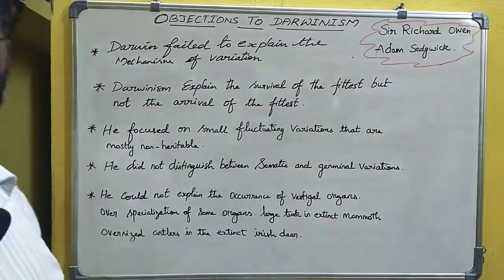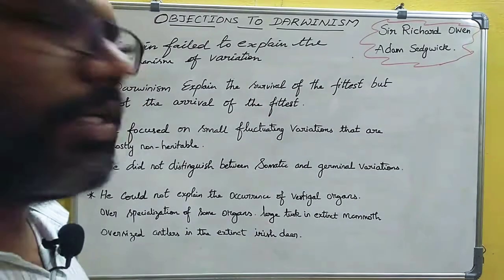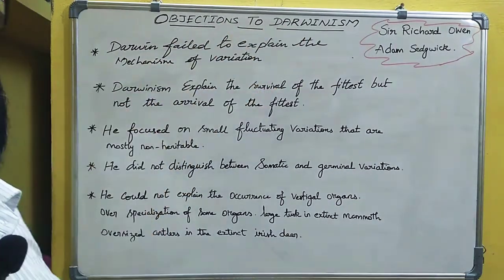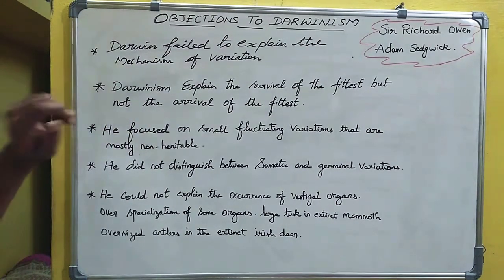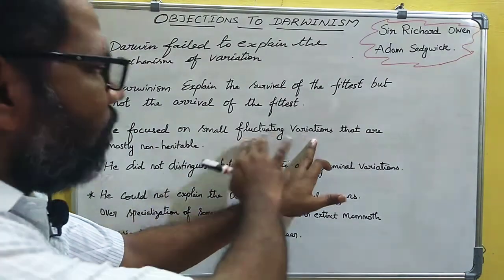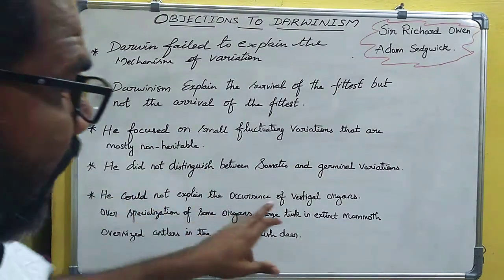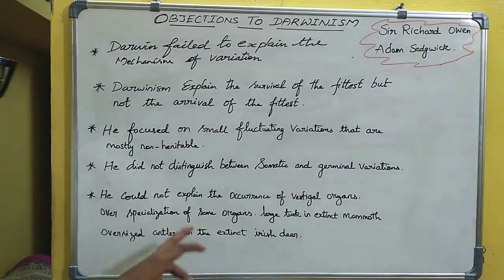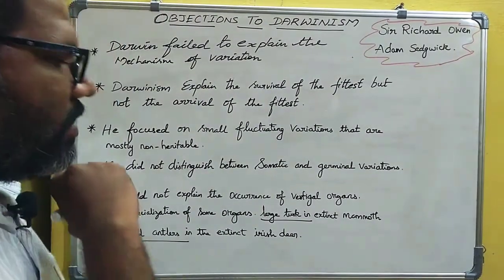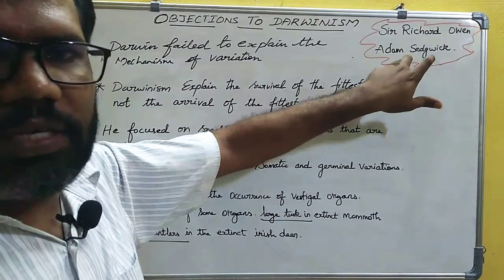So, if you say survival of the fittest, you can develop a better organ, but overspecialization is a problem. In summary, the objections to Darwinism are: Darwin failed to explain the mechanism of variation; he explained survival of the fittest but not arrival of the fittest; he focused on small fluctuating variations that are mostly not heritable; he did not distinguish between somatic and germinal variation; he could not explain vestigial organs; and overspecialization of some organs, such as the large tusks of the extinct mammoth and oversized antlers of the extinct Irish deer. These objections were raised by Sir Richard Owen and Adam Sedgwick.